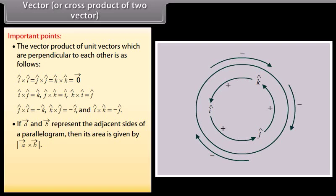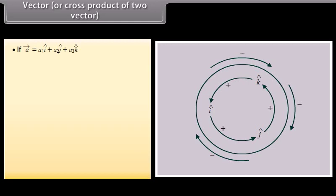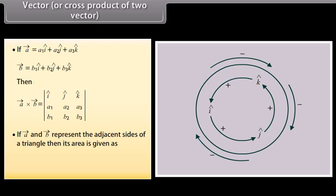If vectors A and B represent the adjacent sides of a parallelogram, its area is given by |A × B|. For three vectors A, B, and C: vector A × (vector B + vector C) = vector A × vector B + vector A × vector C. If vector A = A1 cap I + A2 cap J + A3 cap K and vector B = B1 cap I + B2 cap J + B3 cap K, then A × B equals the determinant with first row cap I, cap J, cap K; second row A1, A2, A3; third row B1, B2, B3. If vectors A and B represent the adjacent sides of a triangle, its area is (1/2)|A × B|.